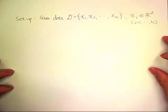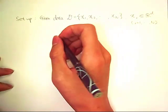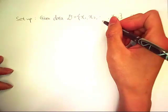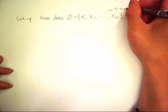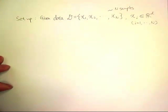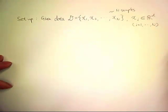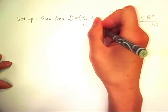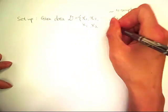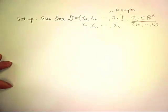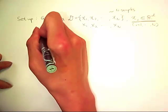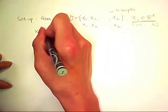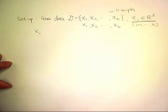So here's our basic setup. Given data D, we have n sample points in a d-dimensional feature space. We'll think of this as n random variables x sub i drawn from the same distribution with an unknown parameter set theta.